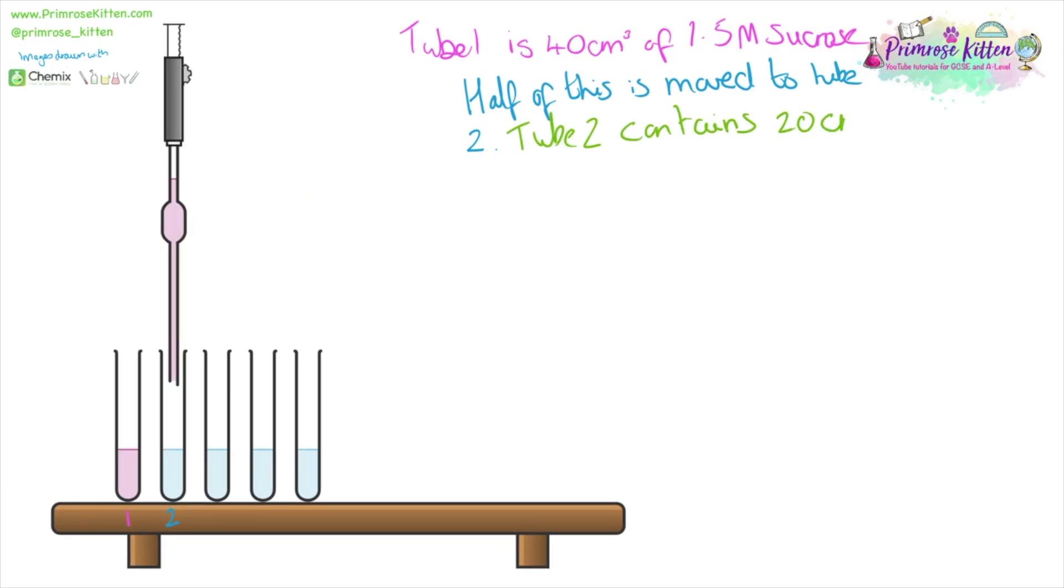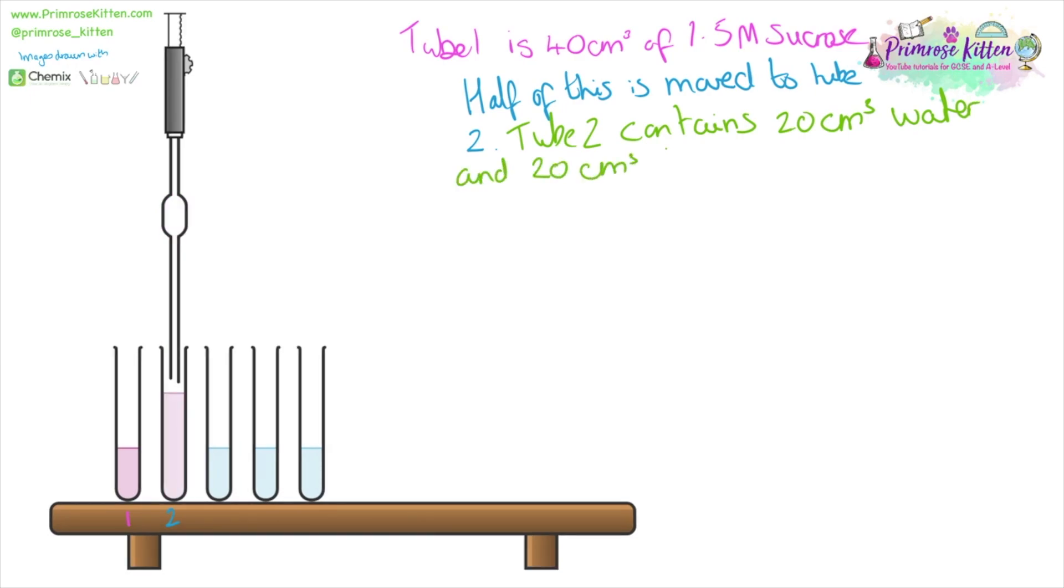Tube number two now contains 20 cm³ of water. To that we are going to add 20 cm³ of 1.5 molar sucrase. Equal volumes. To give a final concentration, 0.75 molar sucrase.